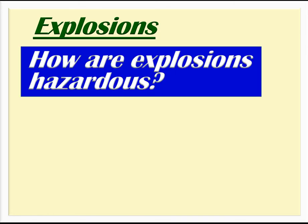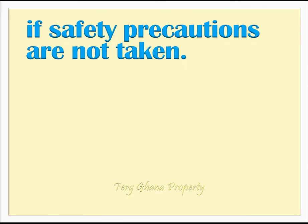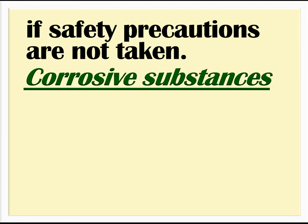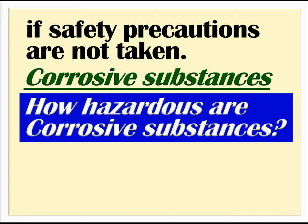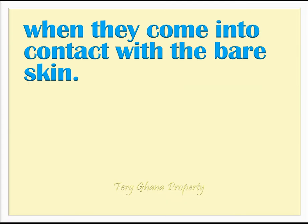Explosions: How are explosions hazardous? Explosions resulting from chemical reactions involving volatile chemicals could cause fire outbreaks if safety precautions are not taken. Corrosive substances: How hazardous are corrosive substances? Substances such as strong acid or base may cause severe skin burns when they come into contact with bare skin.